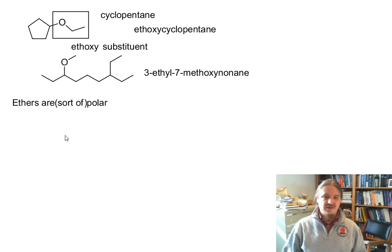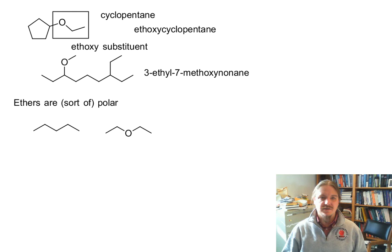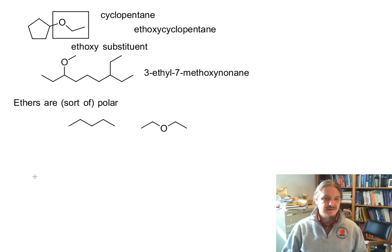Ethers are sort of polar molecules. They're not really very polar. One really interesting demonstration of the low polarity of the ether functional group is that... Here you have pentane. Let's look at their boiling point. Pentane has a boiling point of 36 degrees Celsius. That's pretty low.